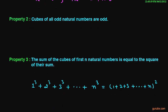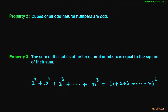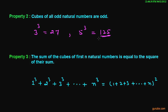The second property is that the cube of all odd natural numbers are odd. Suppose we have an odd natural number 3 and we calculate the cube of 3, then it is 27, and we observe that 27 is also an odd natural number. Suppose we have another odd natural number 5 and if we calculate the cube of 5, then it will be 125, and 125 is also an odd natural number, so this property is also true.